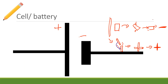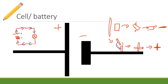Once you know which side is positive and which is negative, you can draw in the current. Because the current goes from the positive to the negative, it must go around in that direction. That's why it's important to know which side is positive and which is negative.